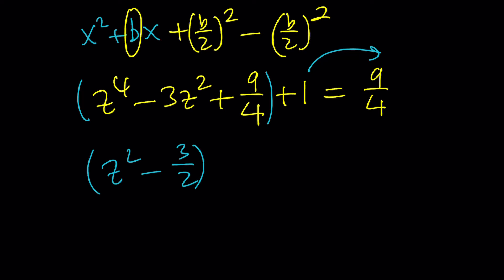Something that's going to bug me forever - 3 halves, the lines need to be aligned - equals 9 fourths minus 1 is 5 fourths.